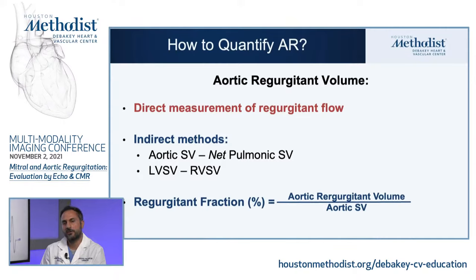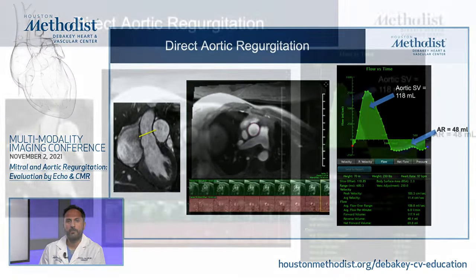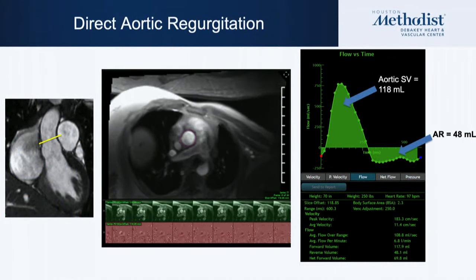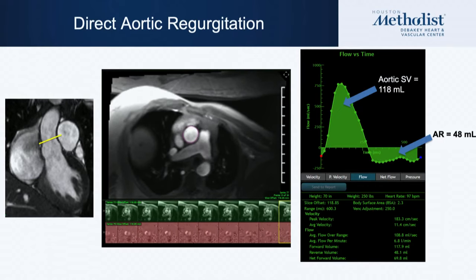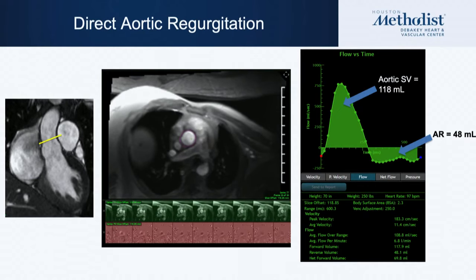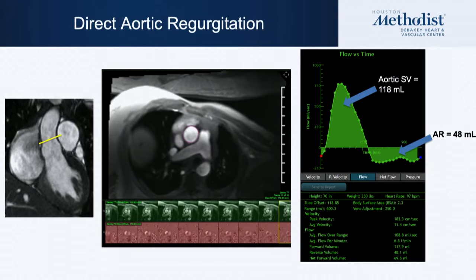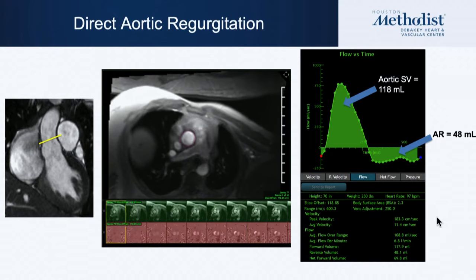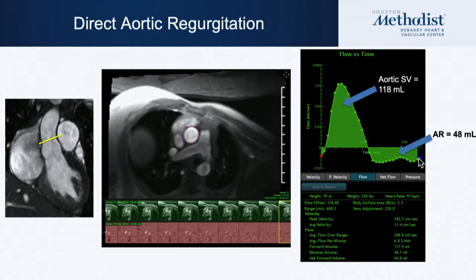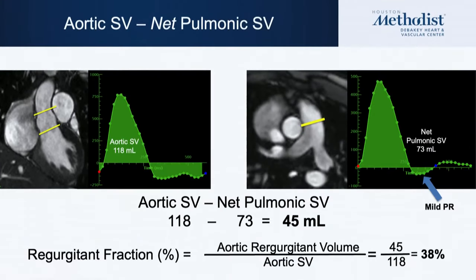Direct measurement of aortic regurgitation: a phase contrast plane is placed at the sinotubular junction, measuring forward flow in systole and the regurgitant flow below baseline in diastole. In one example, forward flow was 118 mL and AR flow was 48 mL; the net pulmonic flow indirect method yielded 45 mL, showing good agreement. Regurgitant fraction is the reverse flow divided by forward flow in the aorta.